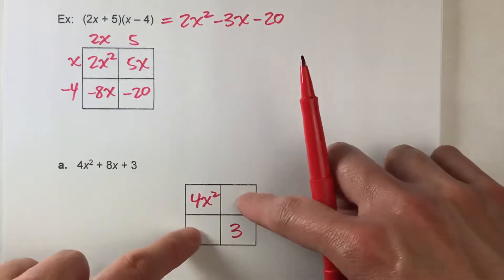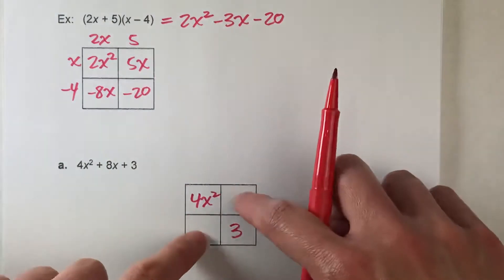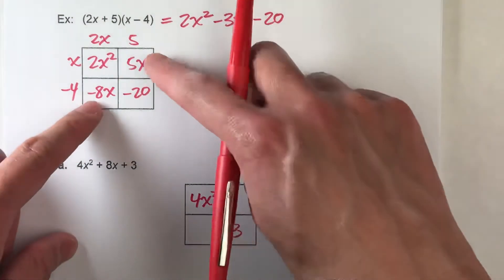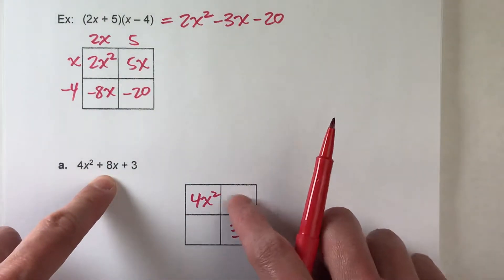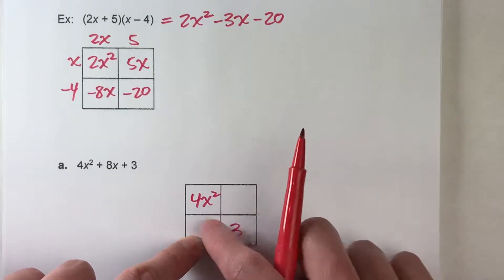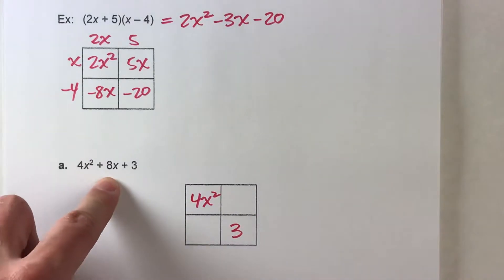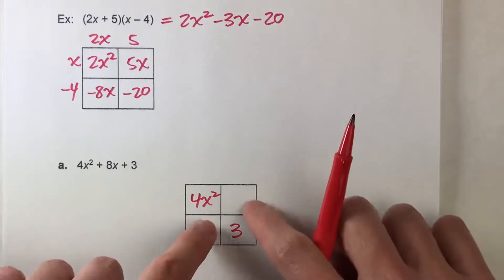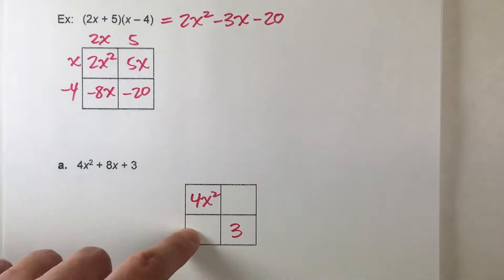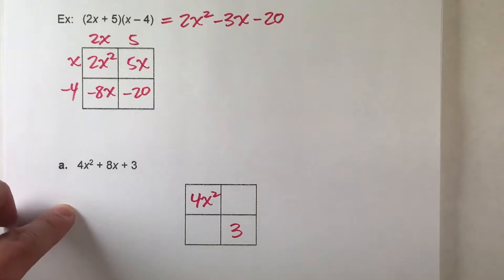And the constant term or the regular number goes right here. And then the other two boxes are the x term broken up into two pieces. So these two boxes right here should add up to 8x. Now the question is, how do I break up this 8x so I know what goes where? Well there's a little trick to that.